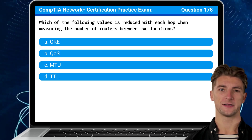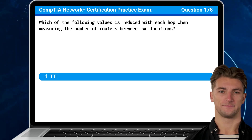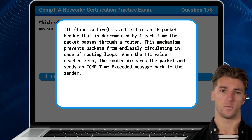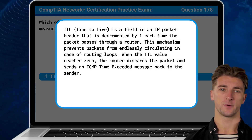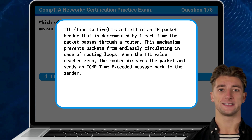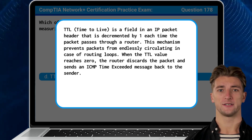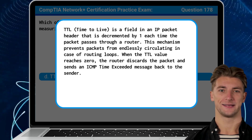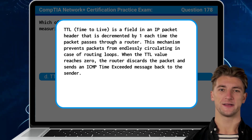The answer is D: TTL, short for time to live. TTL is a field in an IP packet header that is decremented by one each time the packet passes through a router. This mechanism prevents packets from endlessly circulating in case of routing loops. When the TTL value reaches zero, the router discards the packet and sends an ICMP time-exceeded message back to the sender.